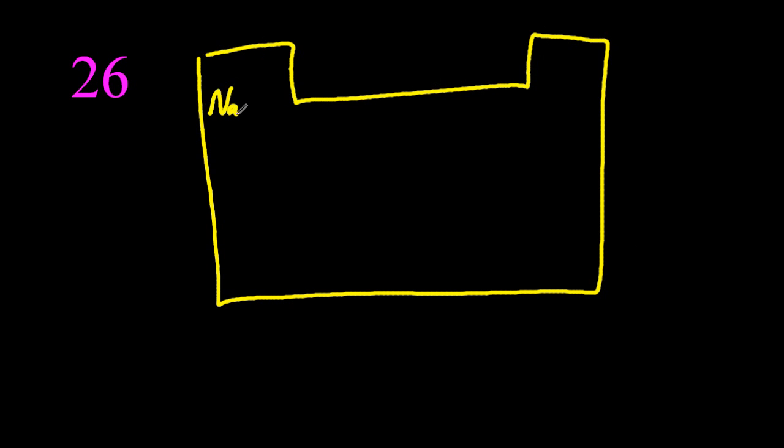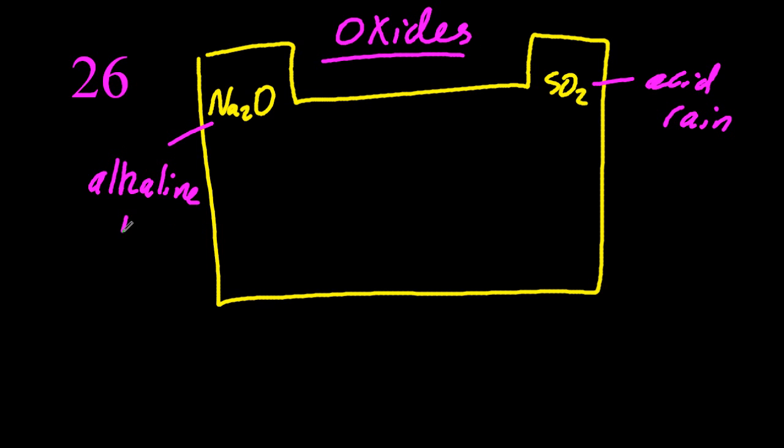Number 26, how to remember the patterns in oxide pH across the table. Sulphur dioxide is in acid rain, so that's acidic on that side, and sodium oxide, well sodium's in alkali metals, so it's alkali on the left.